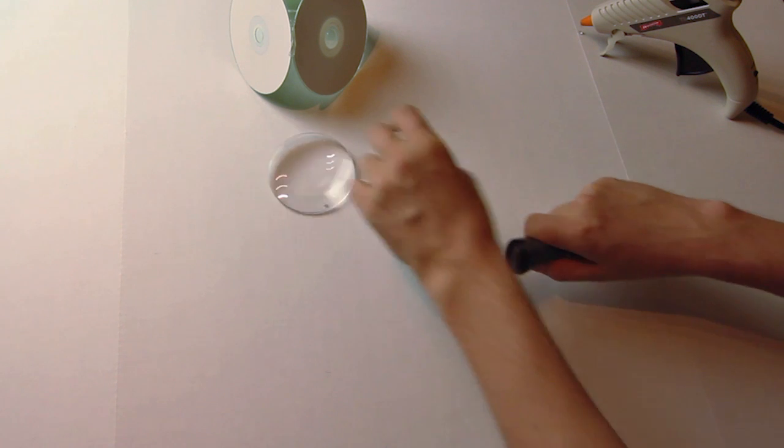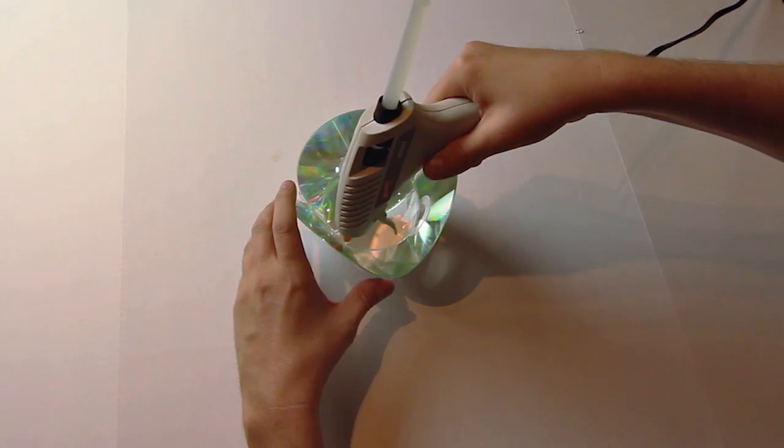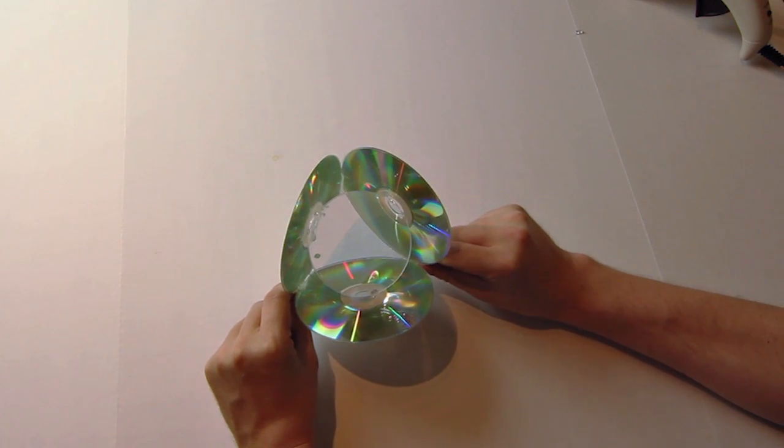Now I'm going to grab a magnifying glass, so that when we apply a light source, we get a little bit more refractive oomph. This is obviously optional, but if you have one laying around that you don't need anymore, go ahead and glue it on in there.